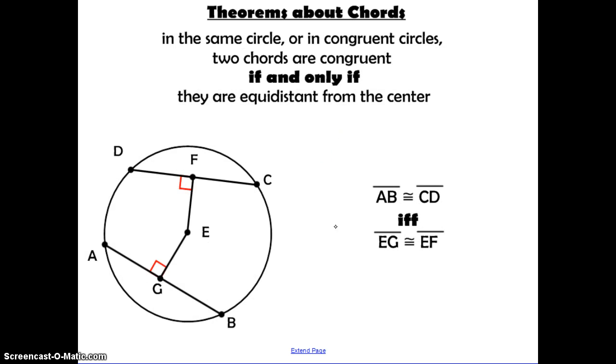Here's another theorem, and it says in the same circle, or in two different circles, two chords are congruent if and only if they are equidistant from the center. So we have to talk again about that definition of how to find the distance from a point to a line. So when we talked about this before, we said that you have to take a perpendicular segment from that point to the line, then this segment FE would be the distance from point E to segment DC.